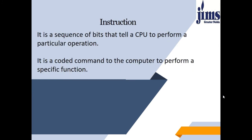Now, what is an instruction? An instruction is a sequence of bits that tells the CPU to perform a particular operation. We have provided data to the computer, and we need to give certain instructions — exactly what we want the system to perform — then the CPU is going to perform that particular operation. It is a coded command to the computer to perform a specific function.